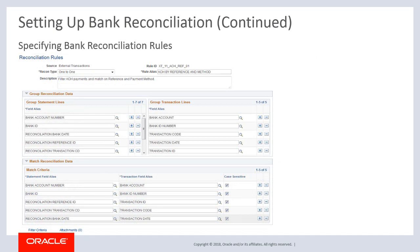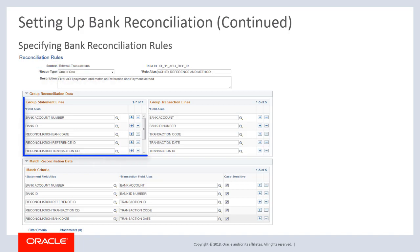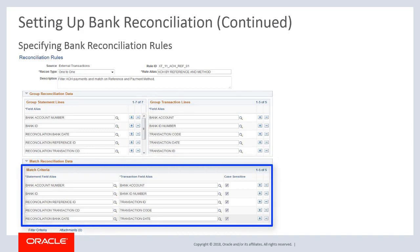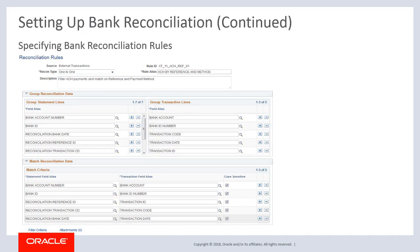This is the Reconciliation Rules page. This example shows rules for external transactions with a one-to-one reconciliation of statement to transaction lines. Reconciliation rules allow you to identify reconciliation source, reconciliation type, grouping criteria for statement lines, grouping criteria for transaction lines, and matching criteria. These fields and grids are discussed in more detail next.